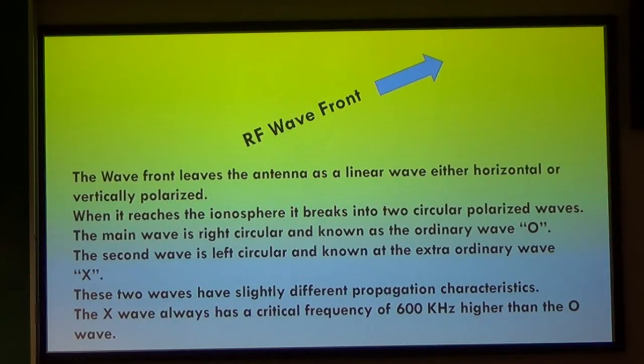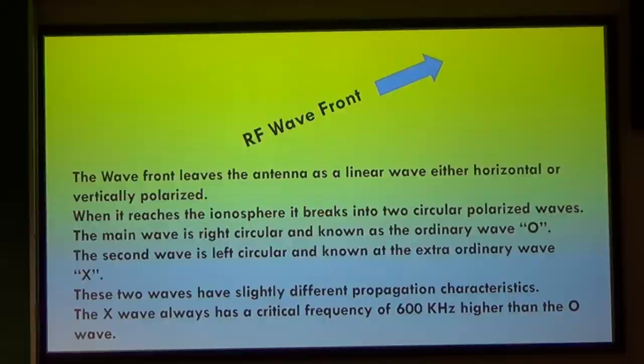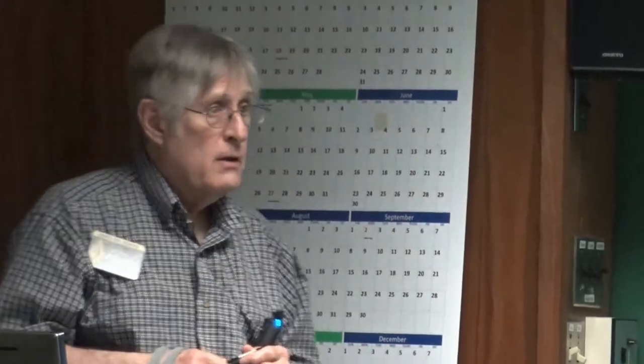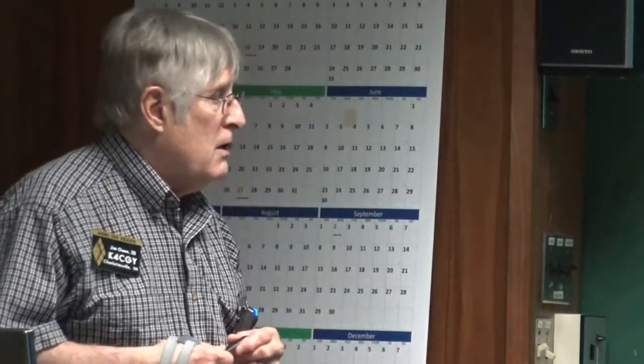If you transmit straight up with vertical incidence, the signal is reflected — not refracted — and it comes back down linear, not as two circularly polarized waves. It only breaks into two circularly polarized waves when it refracts. When shooting straight up, you're not at exactly 90 degrees — there's a little beam width, maybe 88 or 92 degrees — so just because the critical frequency is at 4 MHz doesn't mean a station a little further away can't operate on 5 or 6 MHz. Also, the X wave always has a critical frequency higher than the O wave.